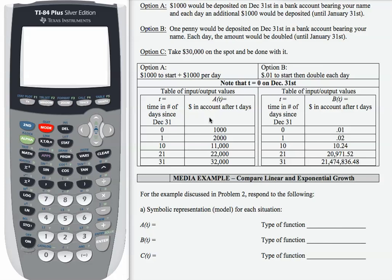Let's talk about option A. For option A you received $1,000 on December 31st and then $1,000 every day after that. So if I think about how my funds would accumulate, for my model I would start with the initial value which was $1,000 and then every day I would add $1,000.